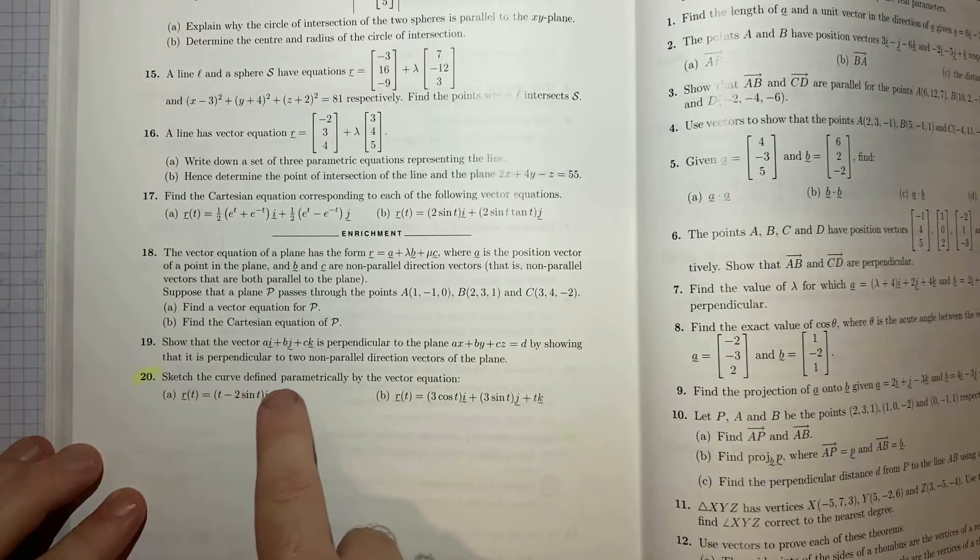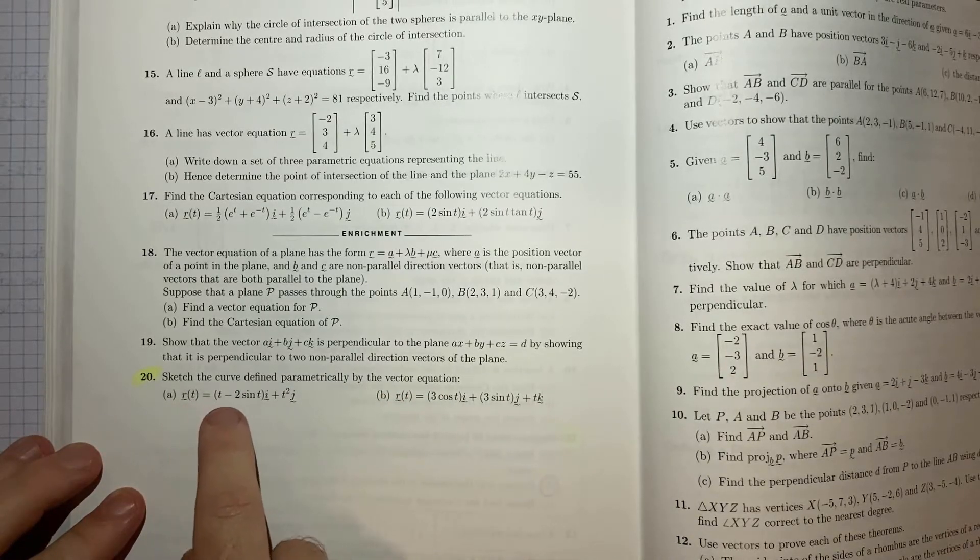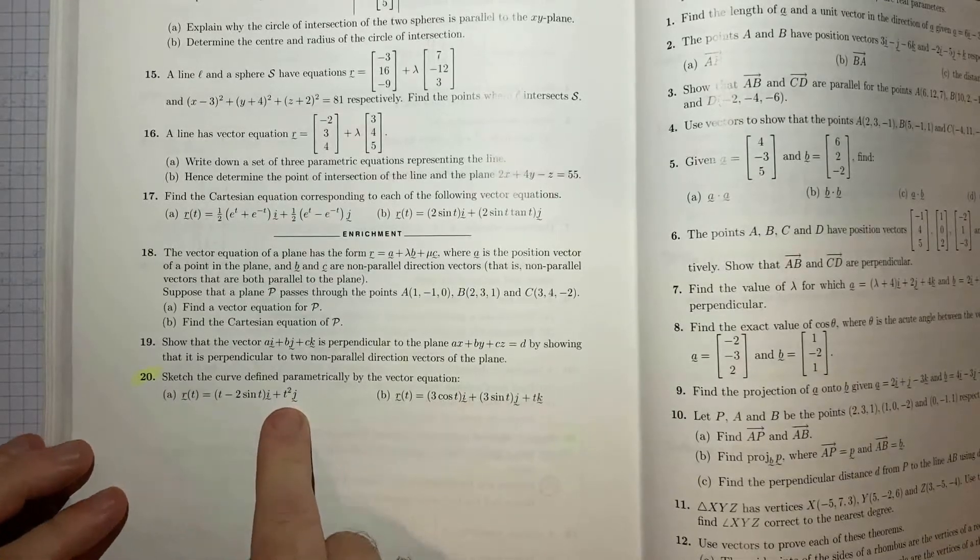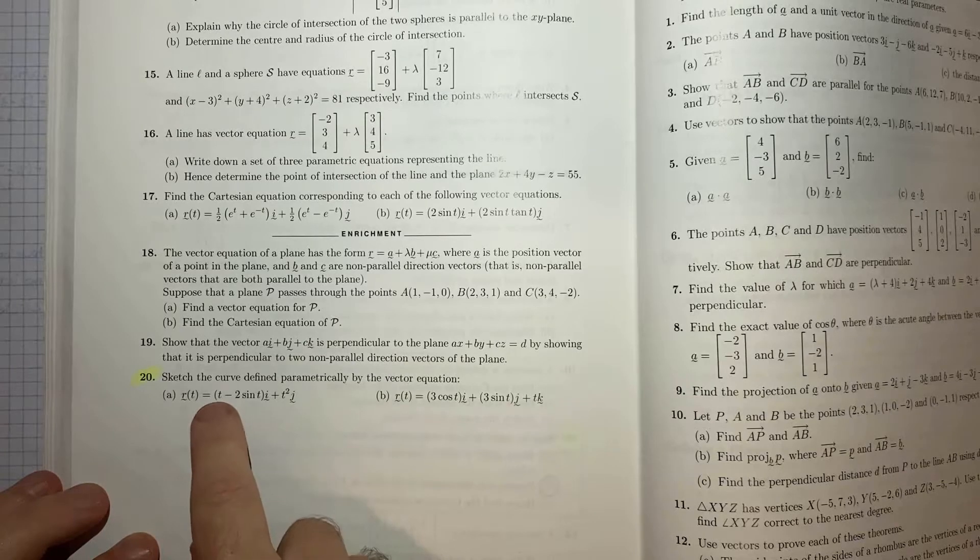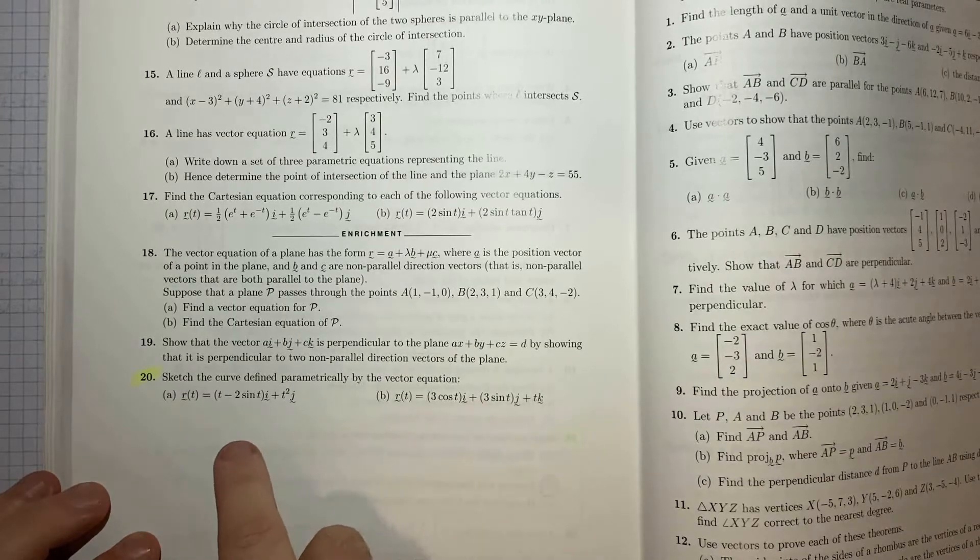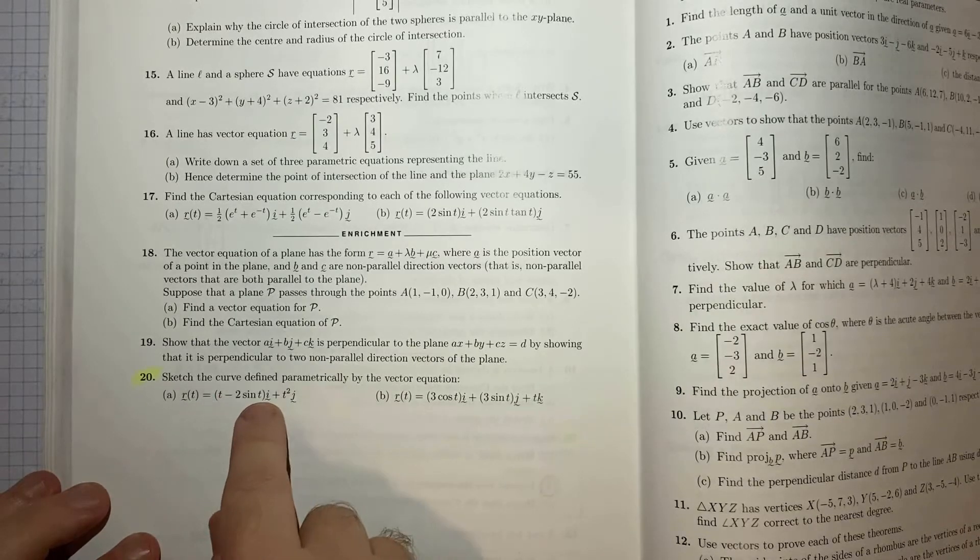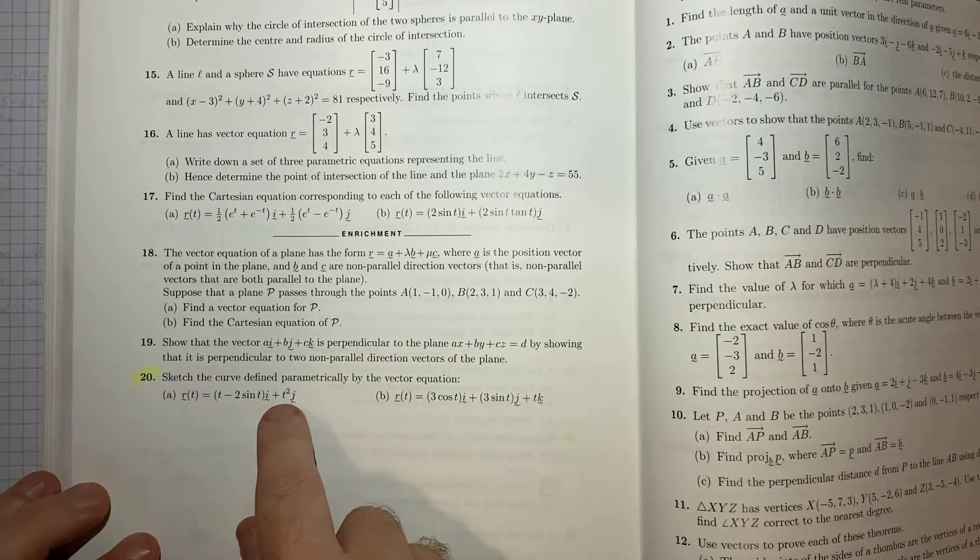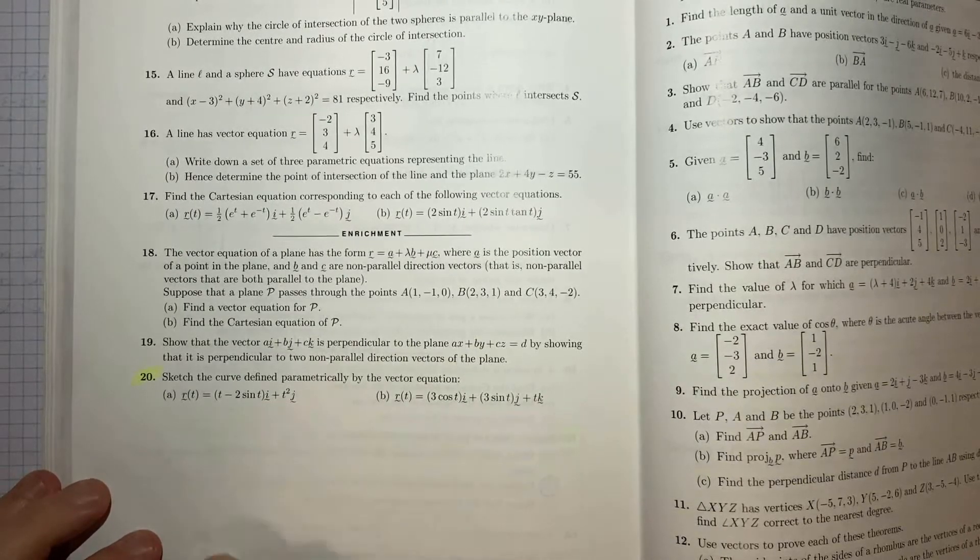So the question is to sketch the curve defined parametrically by the vector equation r vector t is equal to t minus 2 sine t of i vector plus t squared j vector. So given this is a parametric vector equation we've got this parameter t here but ultimately what we're going to sketch will be in terms of an x and y axis where for different values of t we'll get a certain x value which is what sits in front of this i vector and then we'll get a certain y value which is what will sit in front of the j vector because the i vector is basically the horizontal and the j vector is the vertical.